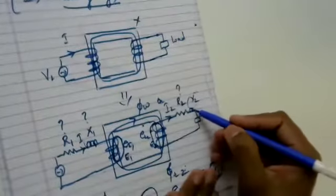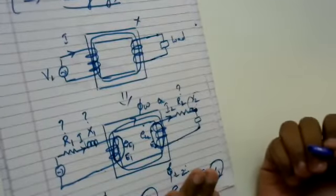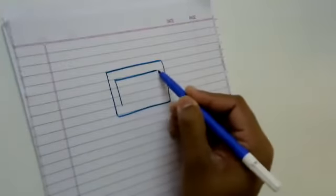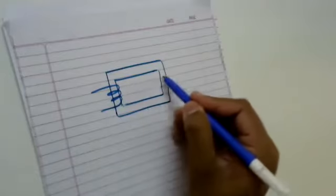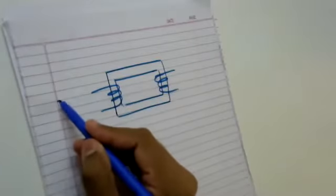For the transformer on load condition, before going to that, let me say that I am not having any load on the secondary — transformer is on no load. So the load is open. For your ease, I will build this circuit once again. I have the magnetic core, the primary winding, and the secondary winding. The resistance and reactance are shown as R1, X1 on the primary and R2, X2 on the secondary, along with the supply voltage.